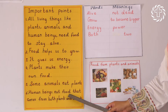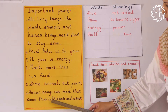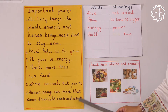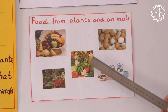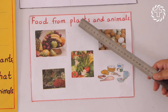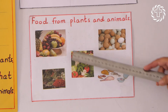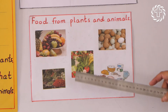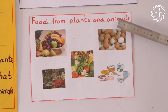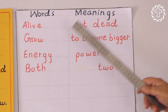Fifth: some animals eat plants. Sixth: human beings eat food that comes from both plants and animals. We see in this picture food from plants and animals — food we get from plants like fruits and vegetables, and food we get from animals.